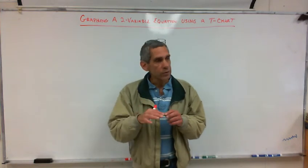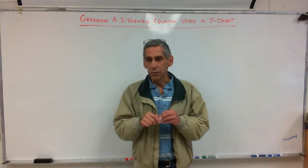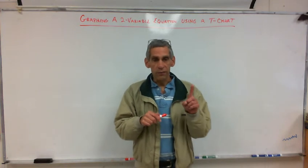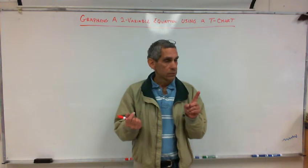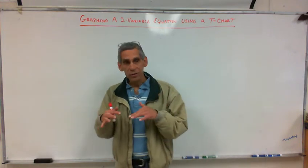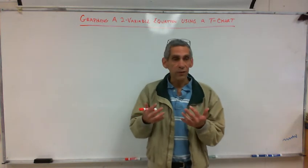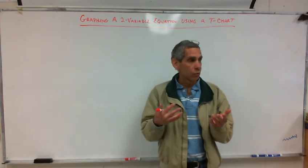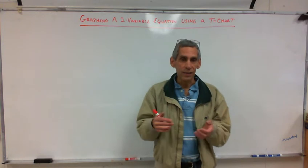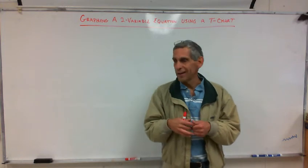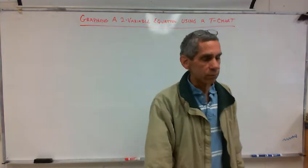Up until this point, every equation that I gave you had only one variable in there. It had like an x, right? Now suddenly we're talking about two variable equations. So you're going to have, usually I like to use x and y. They're pretty common and I just like them, they're easy. But sometimes you'll see an m and an n.